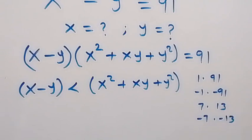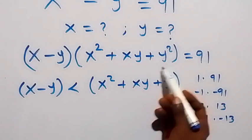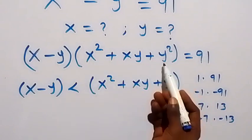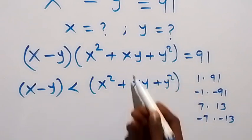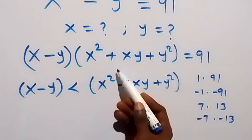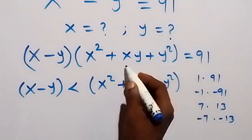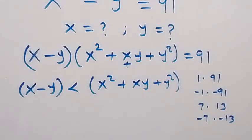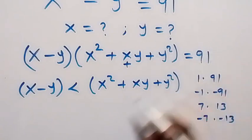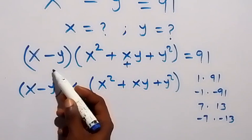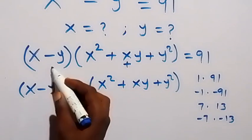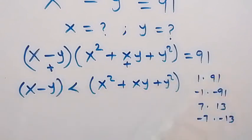Which one will work? In the second bracket, x squared is a positive number and y squared is also a positive number. So this bracket will be a positive number. For us to have a positive result on the right side, the first bracket must also be positive. So the positive factor pairs — 1 times 91 and 7 times 13 — will work, while the negative pairs will not.